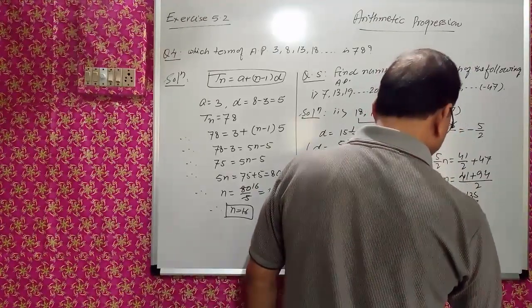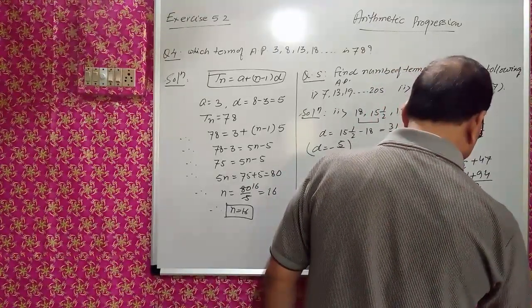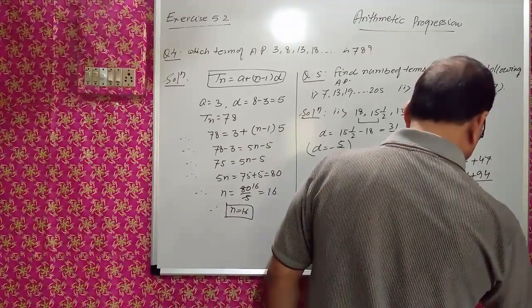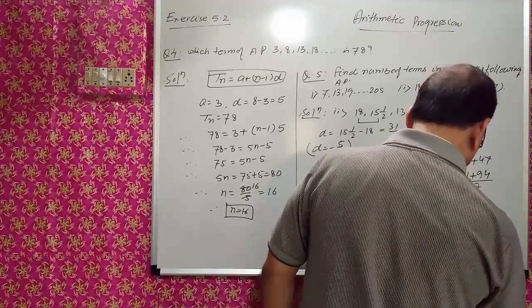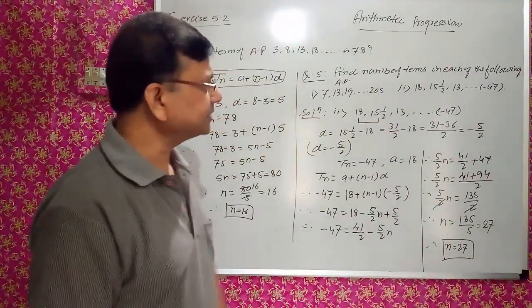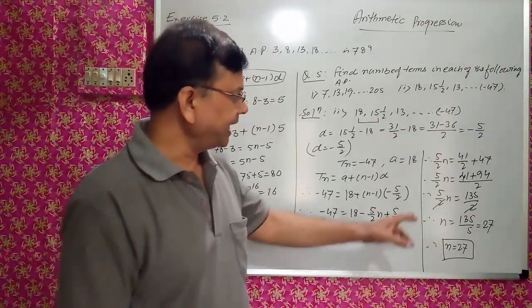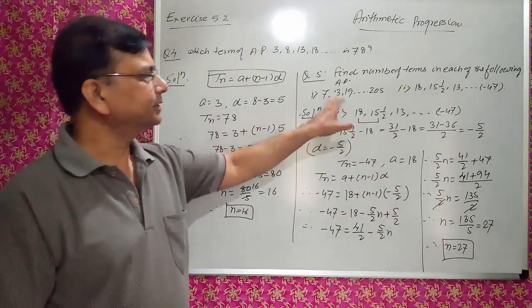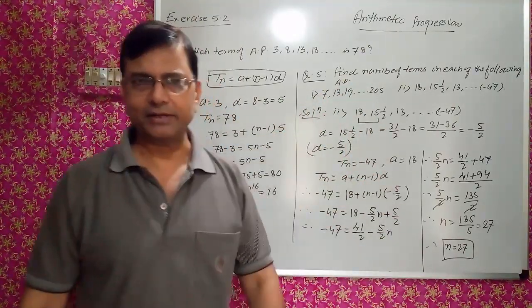Therefore 5N/2 = 135/2, so 5N = 135, therefore N = 27. The 27th term will be -47, and this is the answer. For the first part, you will follow the similar method and get the answer.